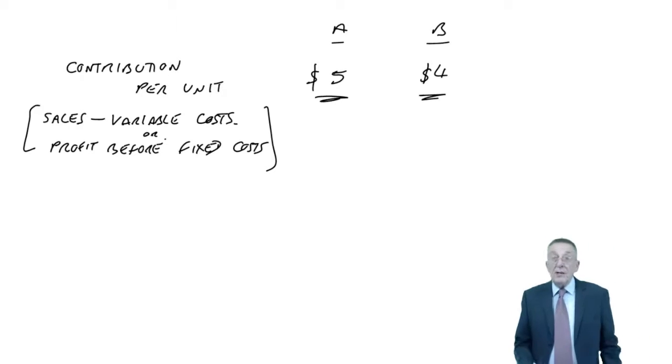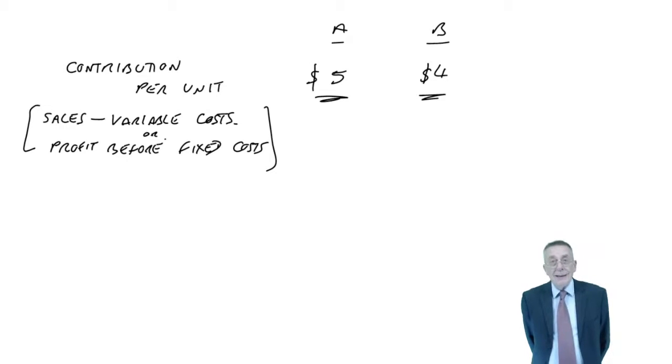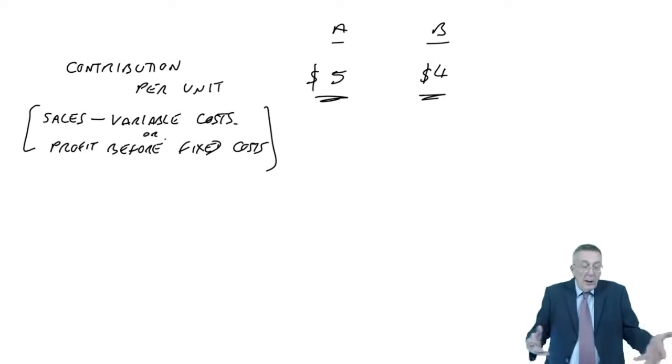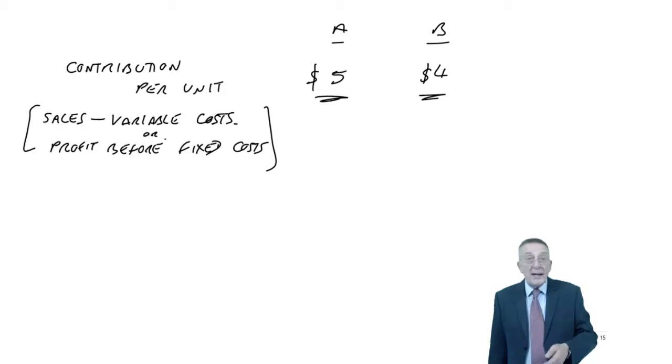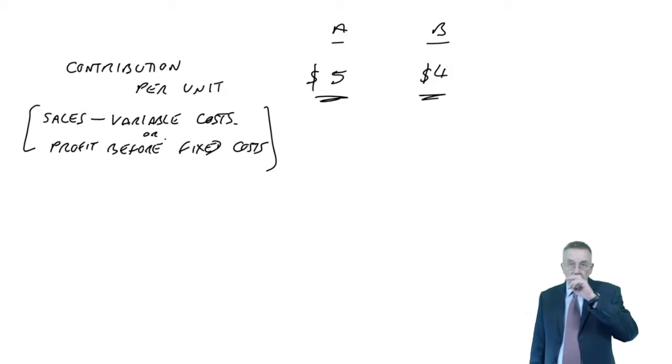It's the contribution that's going to vary as we make more or less A's and B's. Total fixed costs won't change whatever happens. Remember what we're trying to do is decide how many should we make of each. It looks as though A is the better one at $5 a unit, but there's a problem. Every A takes two hours, every B only takes one hour. So if I've got two hours available, I can either make one A and get $5, or with two hours I can make two B's and make $8.